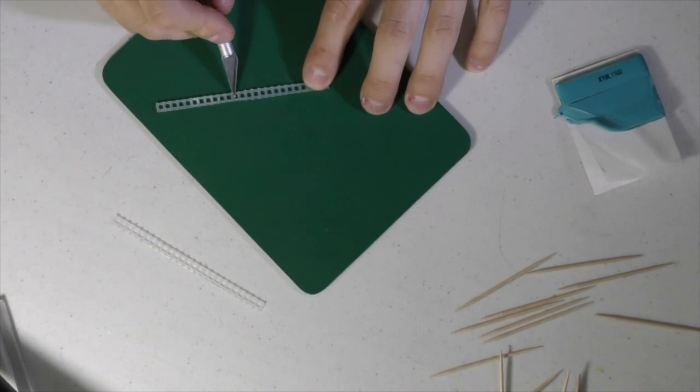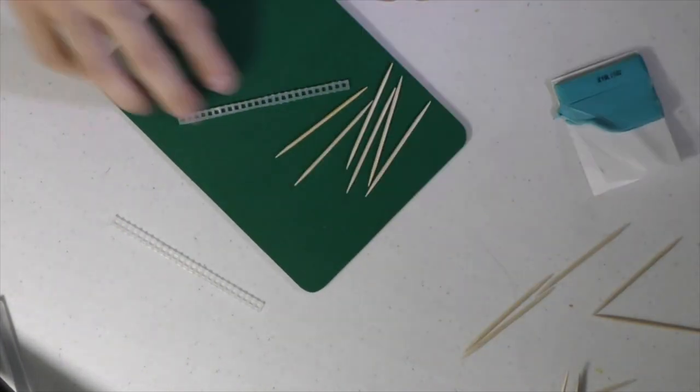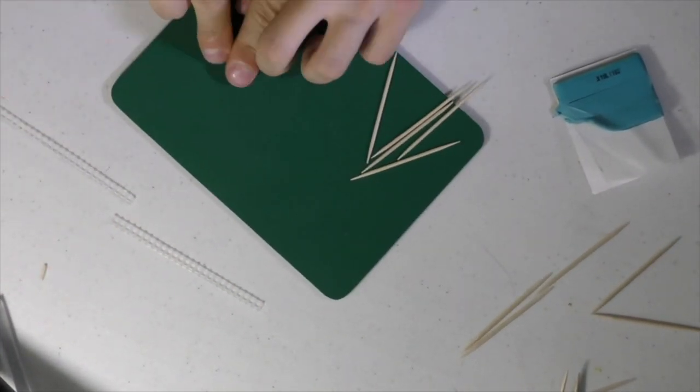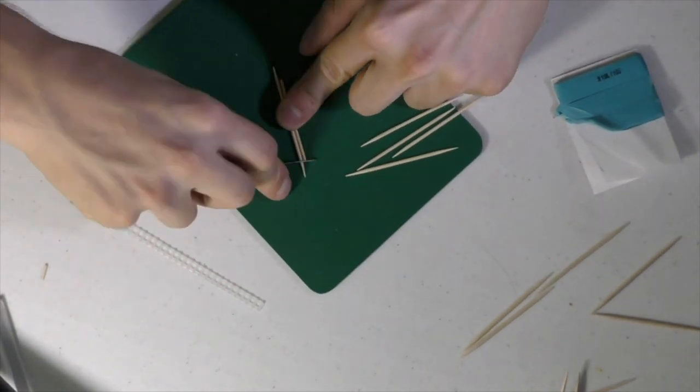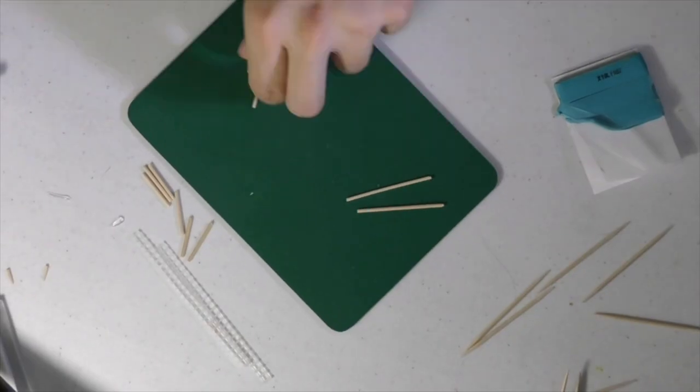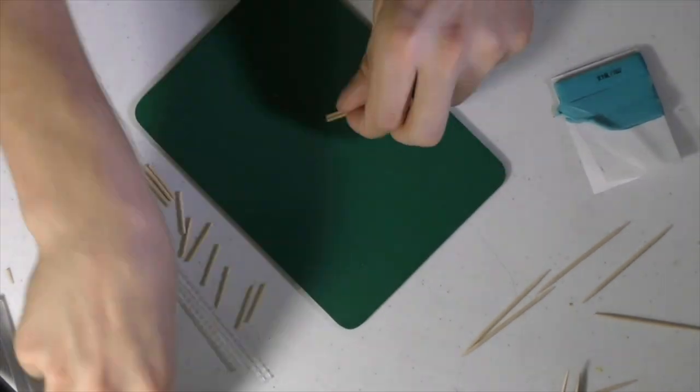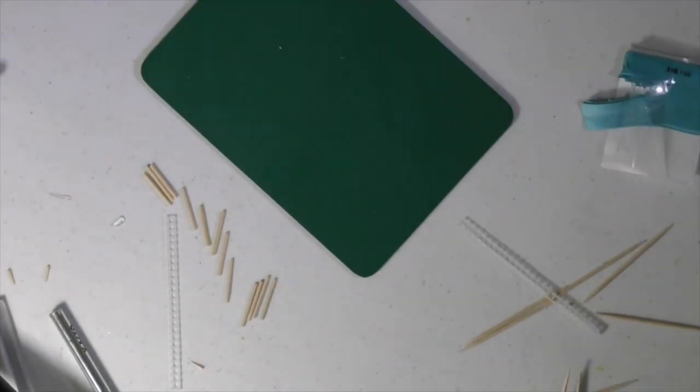Now we're gonna start cutting out the handles that go on the ladder. So first what I did was I counted out how many handles I needed. Then I removed the points and I'm going to end up chopping the toothpicks in half. This gives me roughly a 25 millimeter wide ladder.